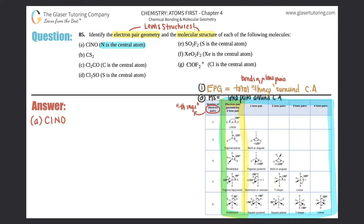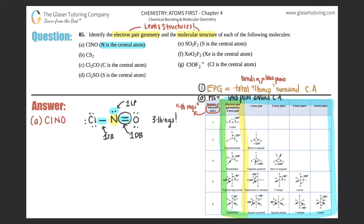If you draw the Lewis structure properly, you should get chlorine single-bonded to nitrogen, with a double bond to oxygen. Oxygen has two lone pairs, nitrogen has one lone pair, and chlorine has three lone pairs. For electron pair geometry, we only care about the central atom — nitrogen. It has one single bond, one lone pair, and one double bond, which counts as only one, so that's a total of three things.